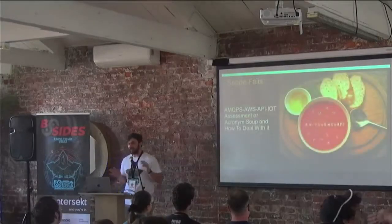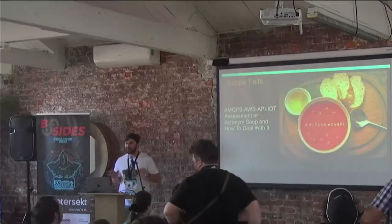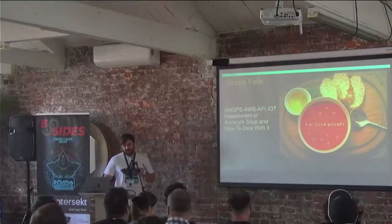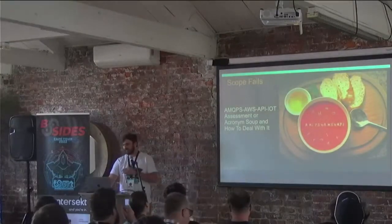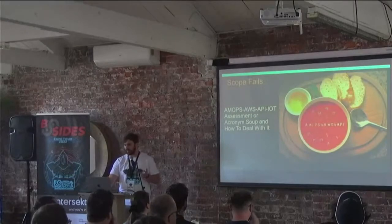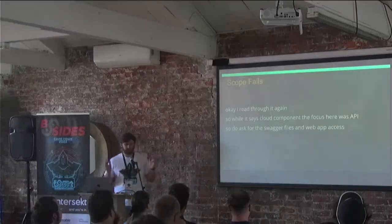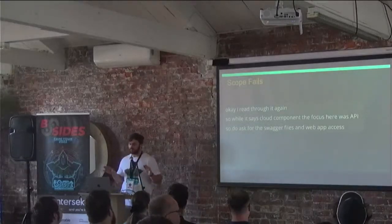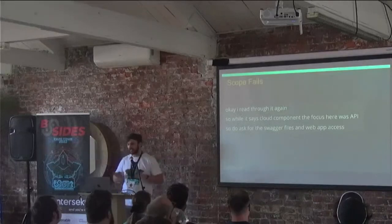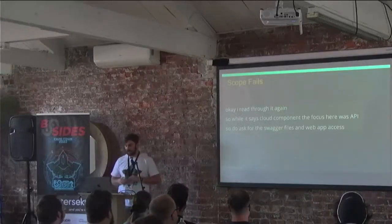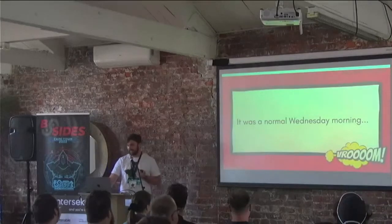The original title for this talk — maybe what I should have kept — was 'AMQP, AWS, API, IoT Assessment,' or 'Acronym Soup and How to Deal with It.' I was on an assessment about a year ago. I read through the scope of work and something felt off. It was an API assessment but it kept referencing some cloud components, so I thought maybe it was an API in the cloud.